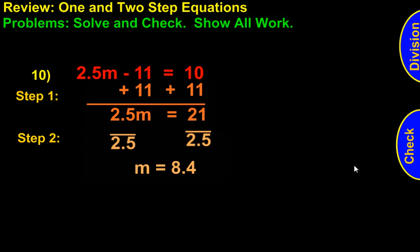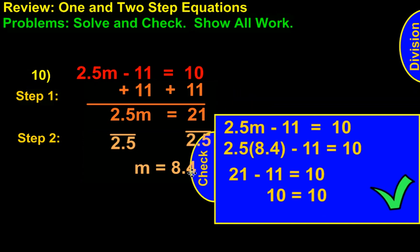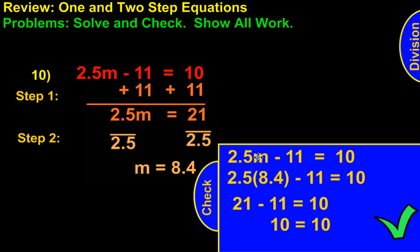Now that we know m equals 8.4, we can stick that into the original equation and check it out. We had 2.5m minus 11 equals 10. We substitute for m, 8.4. So we have 2.5 times 8.4 minus 11 equals 10. 2.5 and 8.4 equals 21. 21 minus 11 equals 10. 10 equals 10, so the check works.